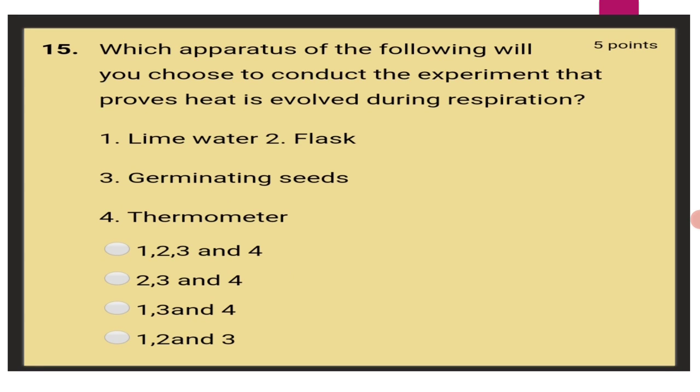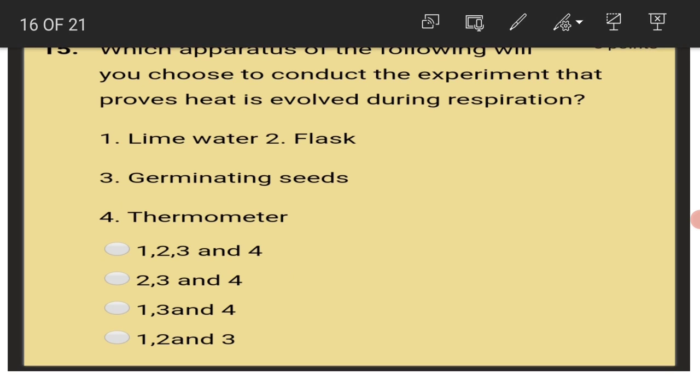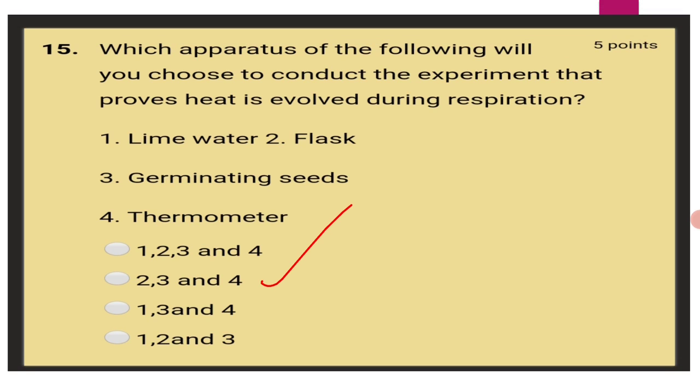Which apparatus of the following will you choose to conduct the experiment that proves heat is evolved during respiration? The answer is 2-3 and 4. That means flask, germinating seeds and thermometer will be chosen for experimentation.